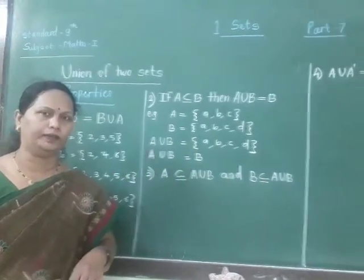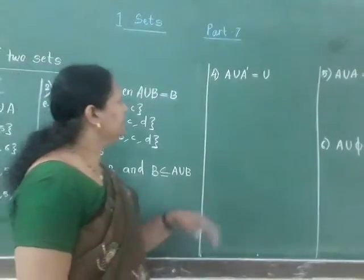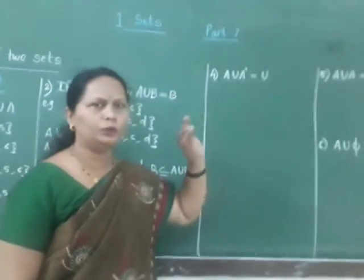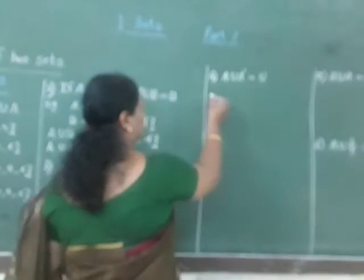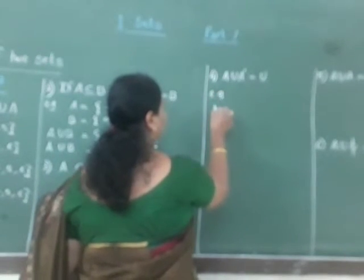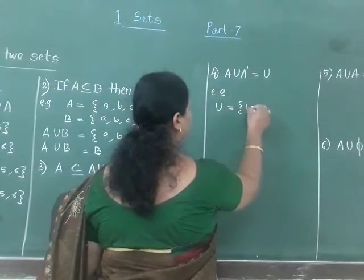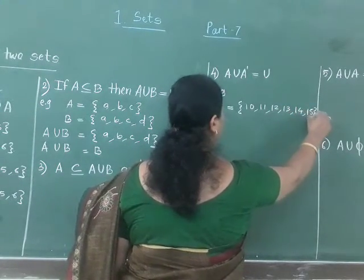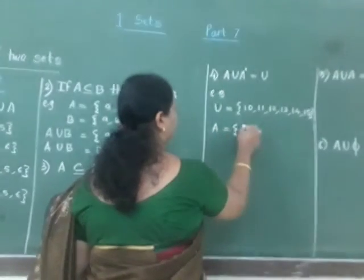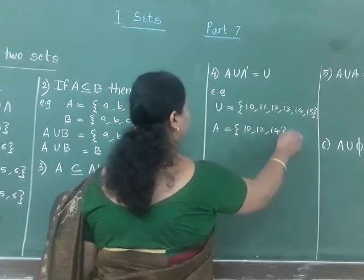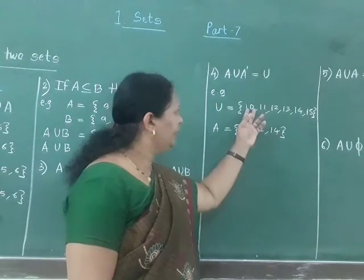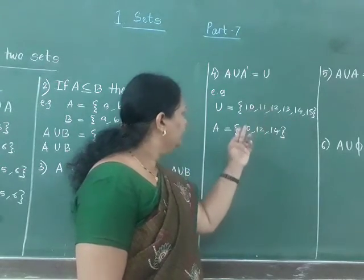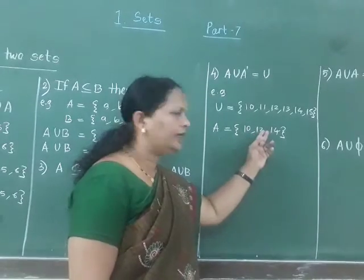Now see the fourth property: A union A dash is equal to the universal set. For example, let the universal set contain the numbers 10, 11, 12, 13, 14 and 15. And set A contains the numbers 10, 12 and 14. Now find out A dash. A dash is the complement of set A, so we remove the elements of A from the universal set. The remaining elements are 11, 13 and 15. So this is A dash.